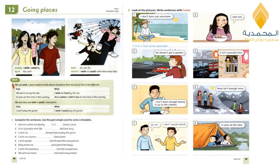Move to your grammar book page 86, unit 12, 'Going Places.' There you can find two pictures. What can you see there? A group of students and they are playing in a park. Let us read the conversation. Maddie: I wish I could fly. Ryan: You can. Beth: We can fly. Martin: I wish we could come here every day. So it seems like they are enjoying their time in the park.